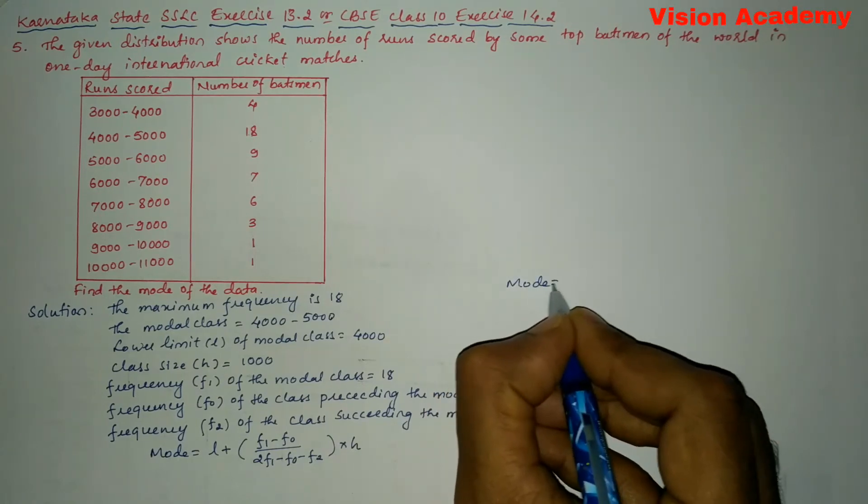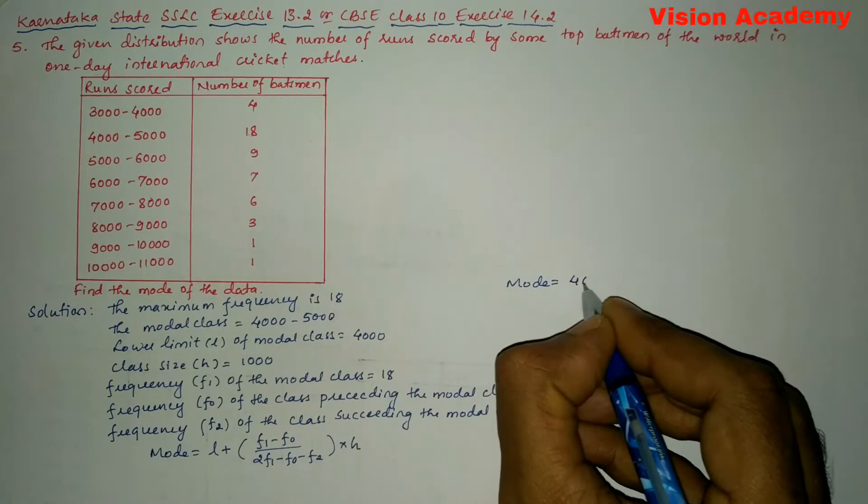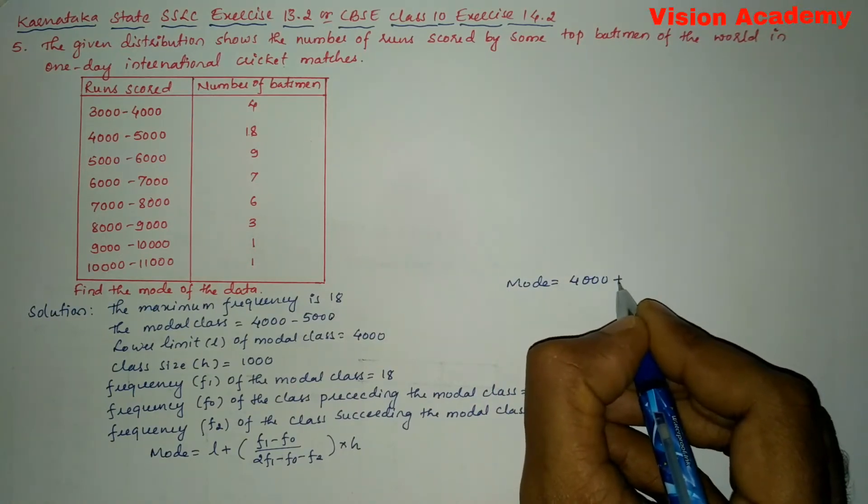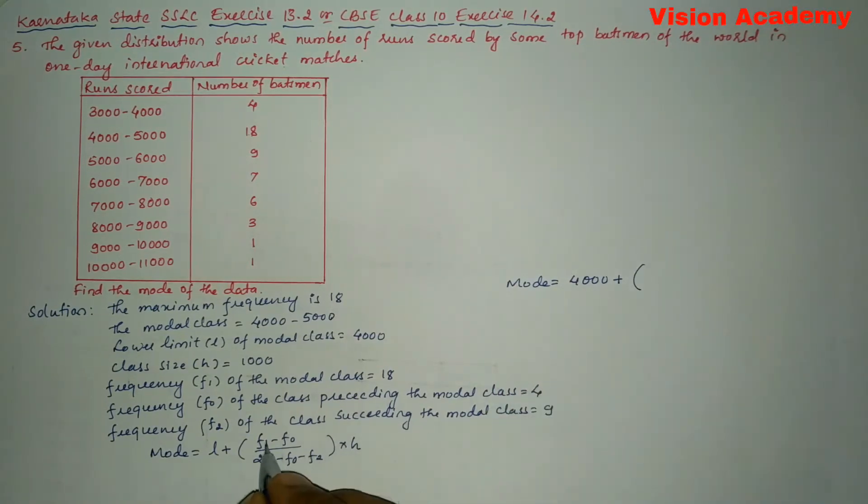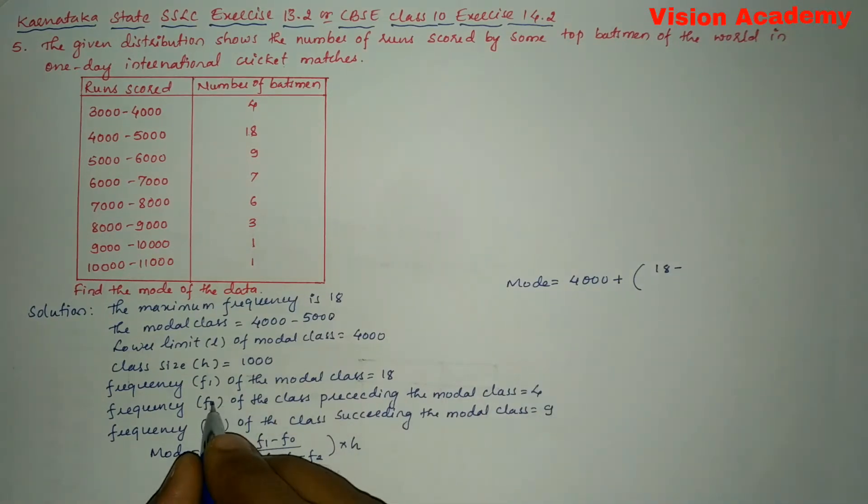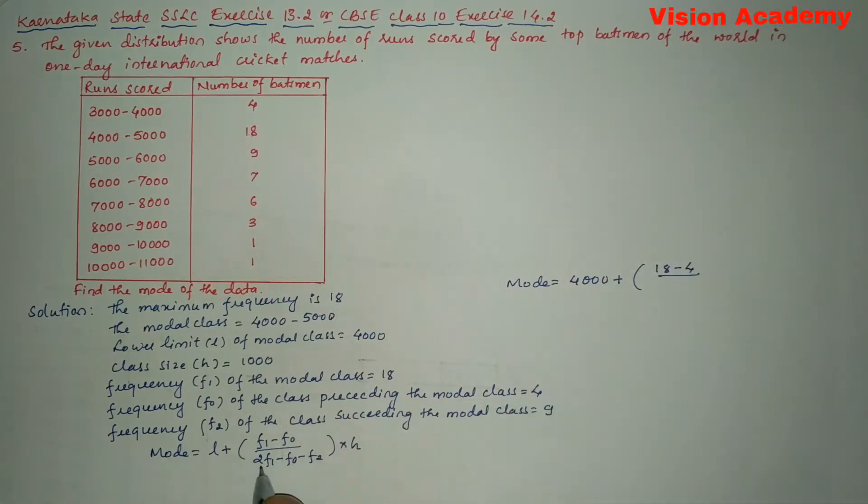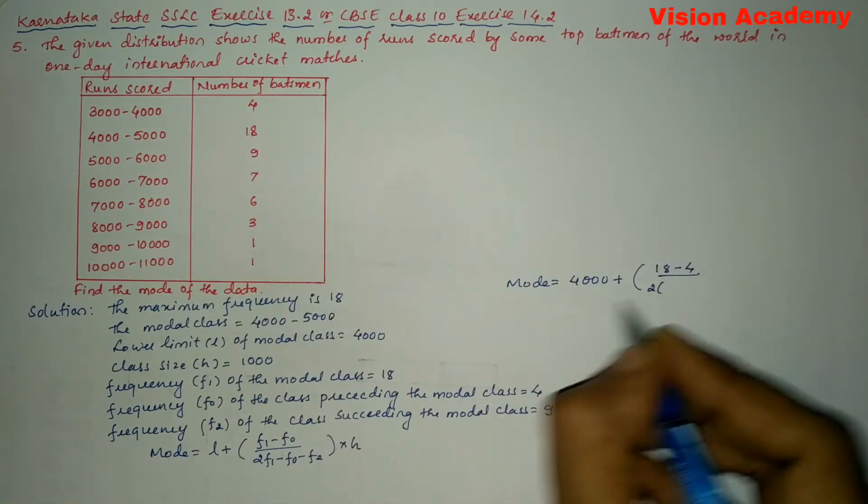Mode is equal to L which is 4000 plus f1 is 18 minus f0 is 4 divided by 2 times f1, so 2 times f1 is 18...